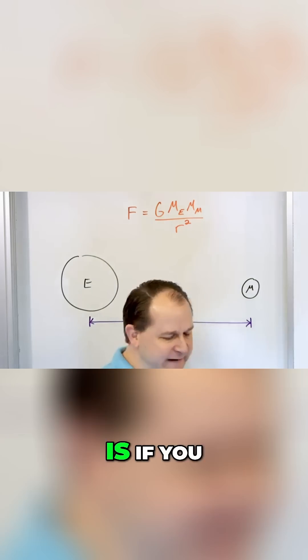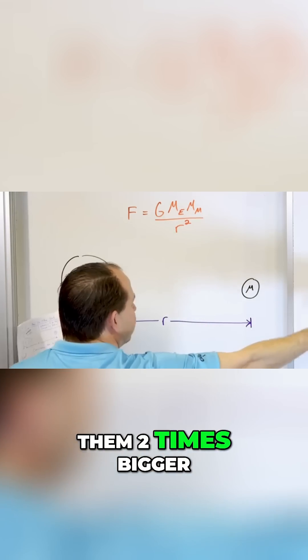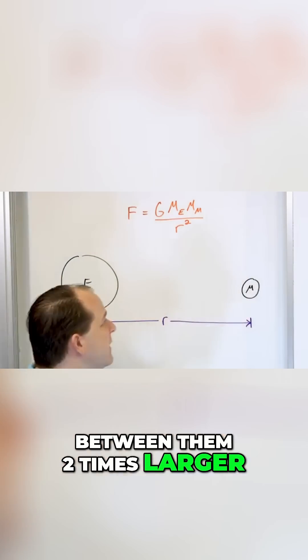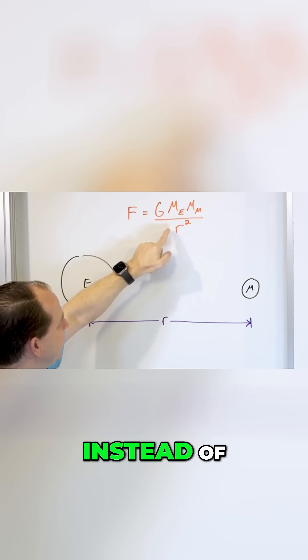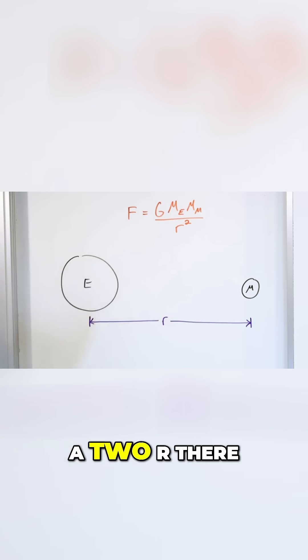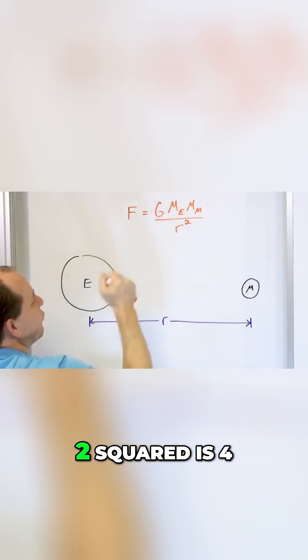And what that means is if you, for instance, make the distance between them two times bigger, if you take the Earth and the Moon and make the distance between them two times larger, then you'll be dividing by 2R. And since you're squaring it, if you make it two times bigger, two squared is four.